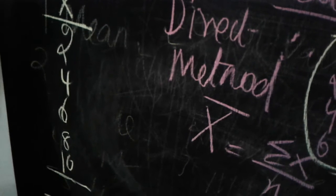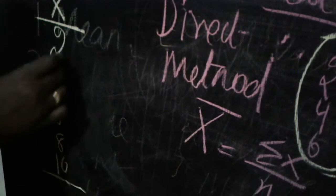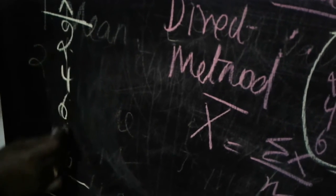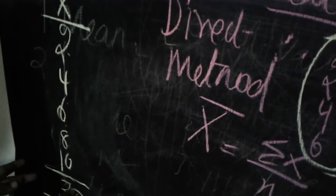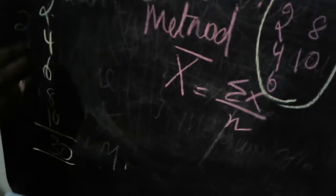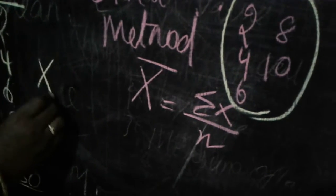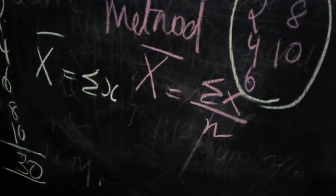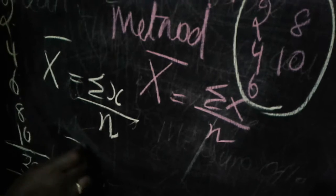Sigma x means you add each and every value: 2 plus 4 plus 6 plus 8 plus 10. The total we get is 30. So sigma x equals 30. Now we also need n from the formula.